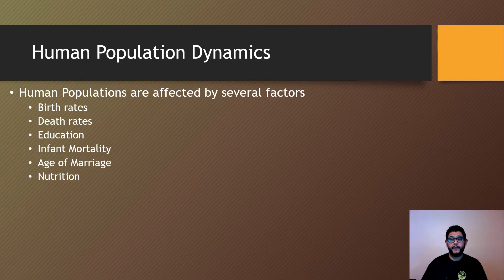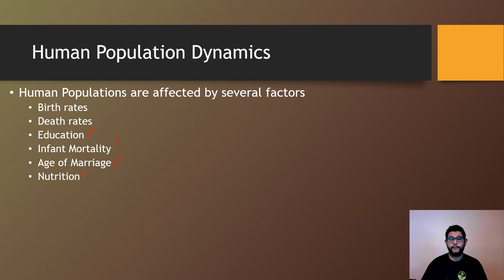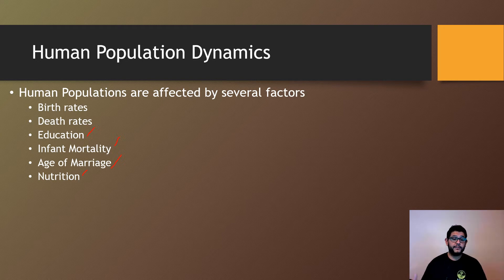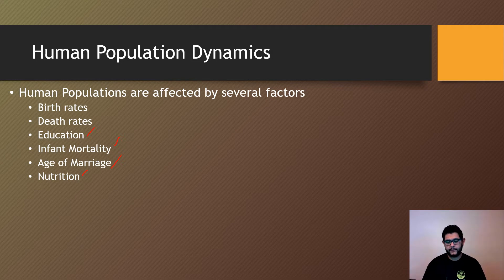But some differences here are education, infant mortality, age of marriage, and nutrition. So that means there's going to be different factors that might play a role as to whether or not a population is going to be growing or declining. And we're going to talk also a little bit about how you can calculate these things.